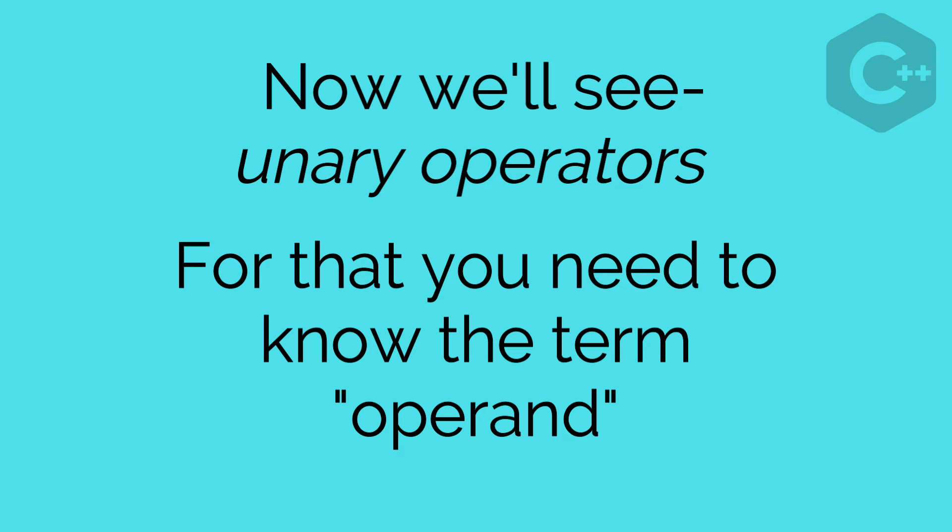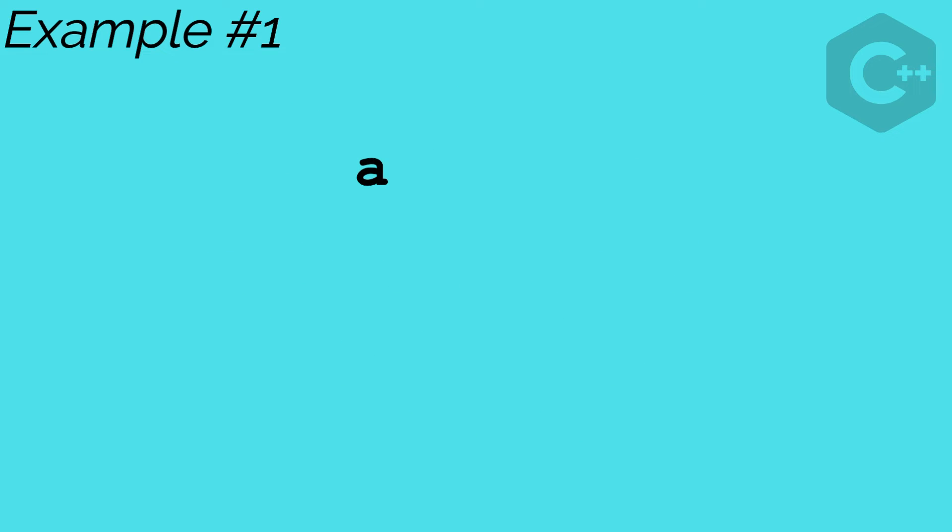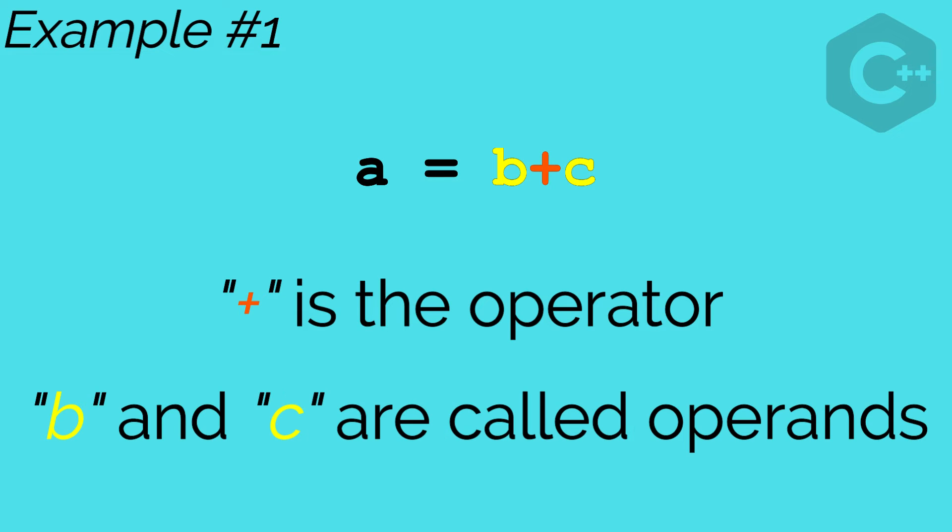Let's take an example. If I say a is equal to b plus c, then here plus is the operator and b and c are called the operands.